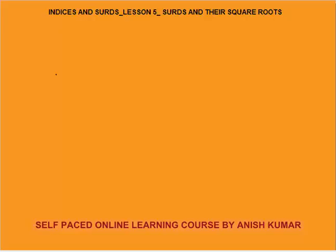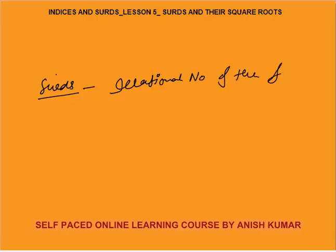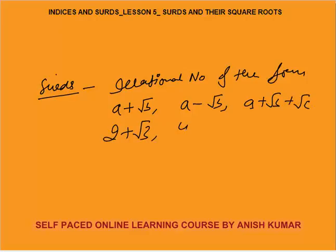Hello, this is Indent Surds lesson 5. In this I will discuss about surds and their square roots. First of all, what are the surds? Surds are irrational numbers of the form a plus root b, a minus root b, a plus root b plus root c. For example, 2 plus root 3, 4 minus root 3, 5 plus root 7 plus root 11. All these numbers are called surds.